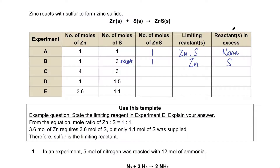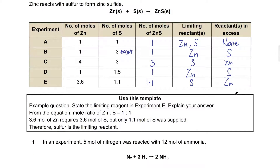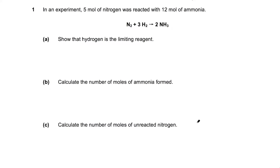Now pause and complete the remaining rows, then check your answers. For Experiment E, if they ask how you arrive at the conclusion that sulfur is limiting: since the ratio is 1:1, if I put in 3.6 moles of zinc I would need 3.6 moles of sulfur as well, but I only have less than that — not enough. Therefore sulfur is the limiting reactant. You can use this template to phrase your answer when an explanation is required.